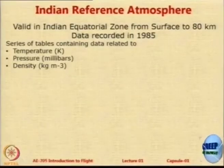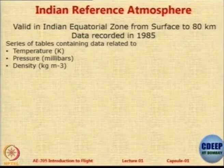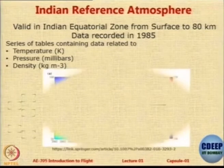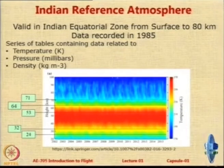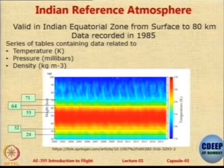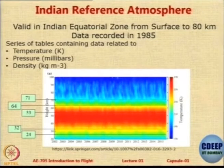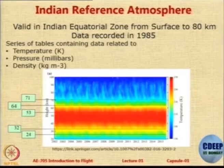So what basically is IRA? IRA is a series of tables. It contains the values of temperature in Kelvin, pressure in millibars, and density in kg per meter cube. Under IRA conditions, you can see the temperature variation over the years recorded in India. It is not constant — you can see it goes in cycles.